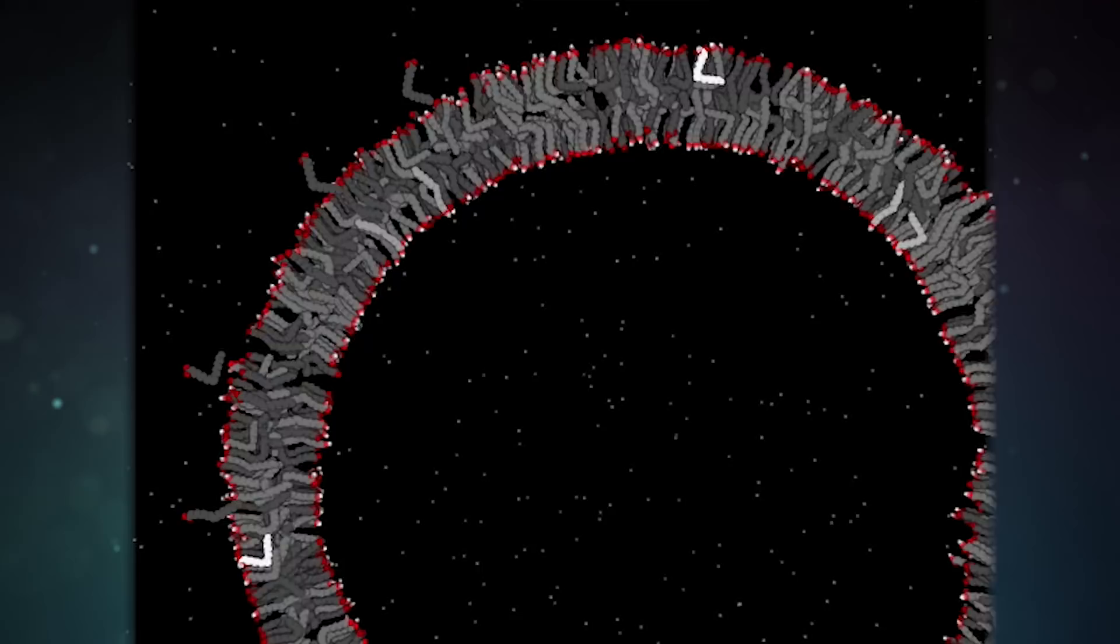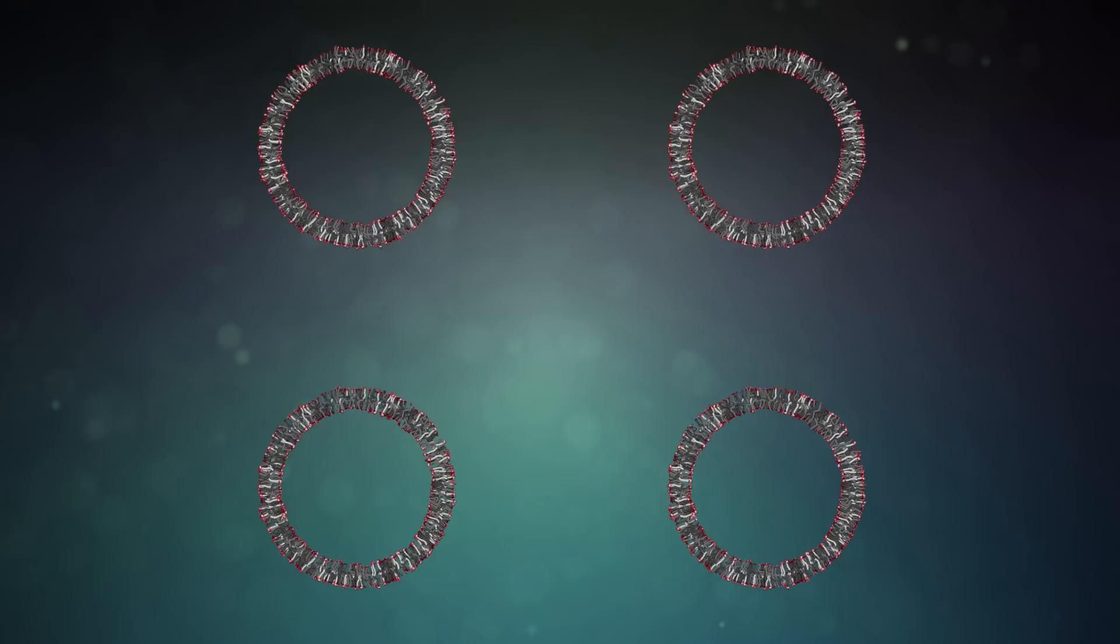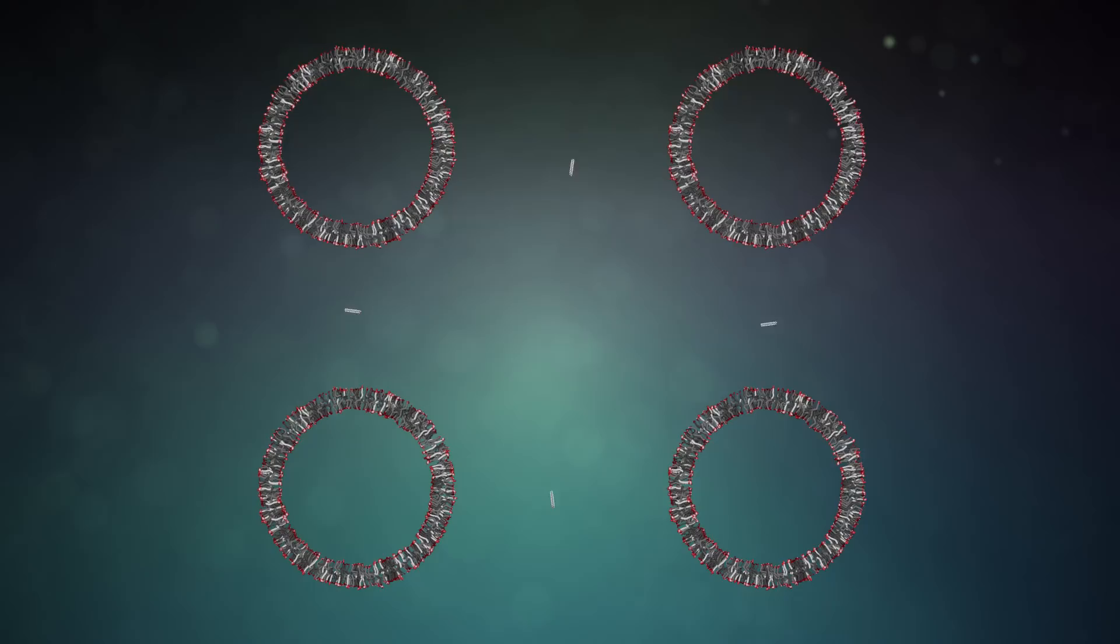Fatty acid membranes are very dynamic and will even exchange fatty acids with nearby vesicles. When they do that, it's literally like they're eating part of their neighbor and getting eaten at the same time. Although, not deliberately. Again, it's just following the laws of chemistry.